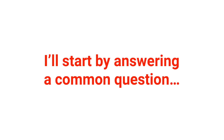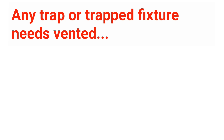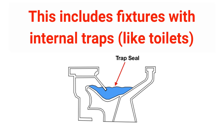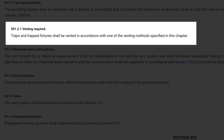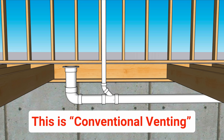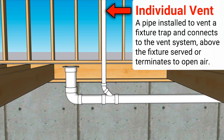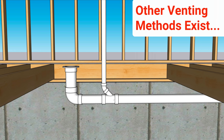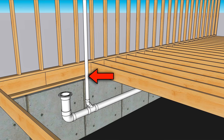Does a toilet need to be vented? Yes — codes require toilets to be vented. In fact, any trap or trapped fixture needs to be vented, including fixtures with internal traps like toilets. IPC section 901.2.1 says: traps and trap fixtures shall be vented in accordance with one of the venting methods specified in this chapter. The venting method shown here is conventional venting — that's when a plumbing fixture is vented with its own individual vent, which is a single pipe that vents a plumbing fixture's trap. There are other venting methods: common venting, wet venting, and circuit venting, but this video demonstrates a simple individual vent.